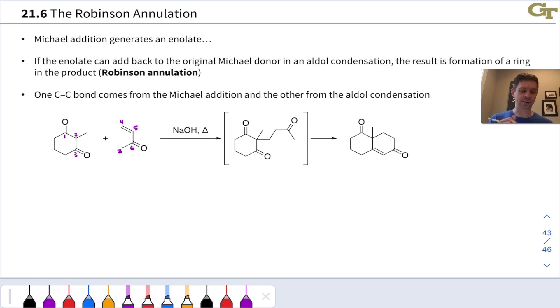The basic idea here is that after a Michael addition, a Michael addition generates an enolate. And if that enolate or an isomeric enolate of the Michael acceptor can add back to the original Michael donor in an aldol condensation, we can get what's called the Robinson annulation.